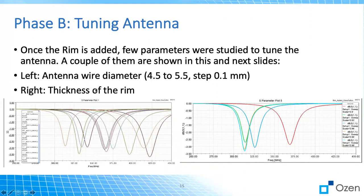On the left-hand side, you see the antenna wire diameter swept from 4.5 to 5 millimeters in steps of 0.1 mm. On the right-hand side, we see the different rim thicknesses. There's a huge difference going from 0.9 (90%) to 0.96 or 0.97, but when you're around 97% to 99%, there's not that much difference in phase shifting — it just gets deeper and S11 is in better shape.